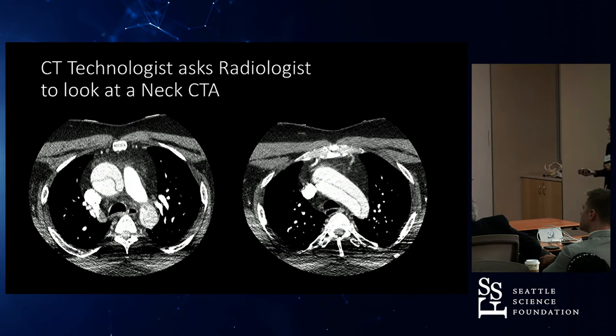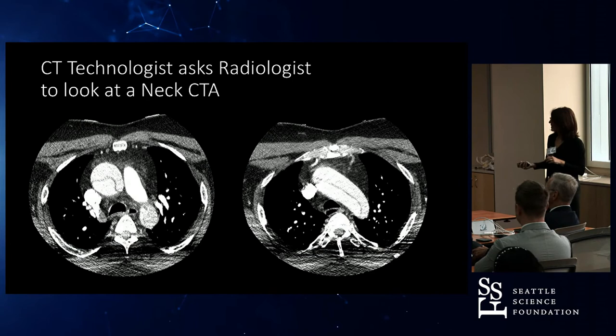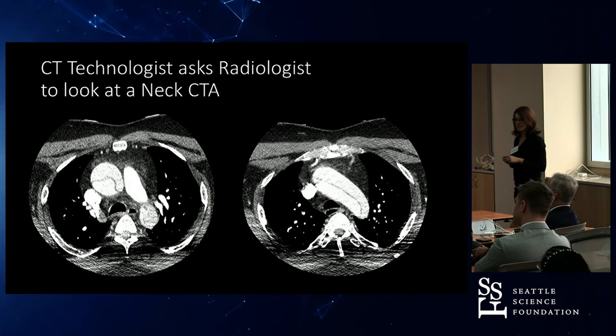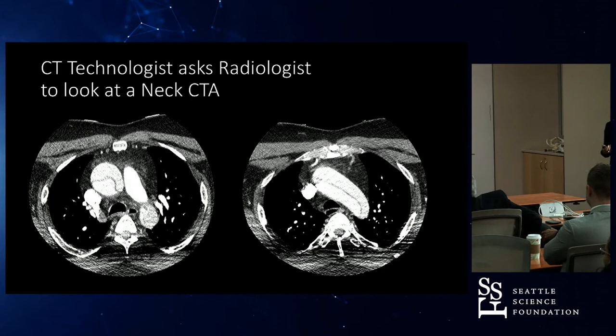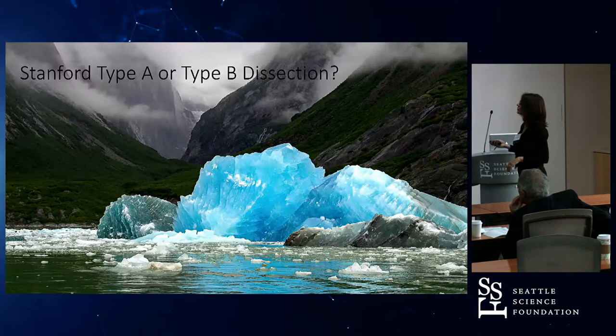Sure enough, we have a dissection involving the ascending aortic arch — and it's hard to see. But you can see the dissection here. So what type is this — Stanford A or B? A. Okay, so this is a little scary. We were only getting the neck, so I said, okay, let's do the whole chest and abdomen. We got that — Type A.